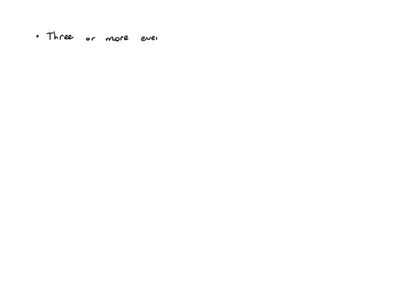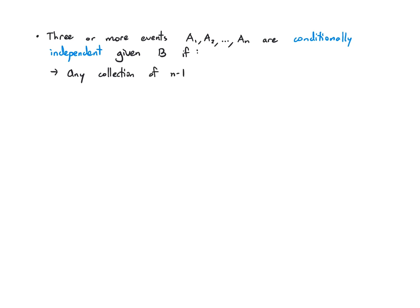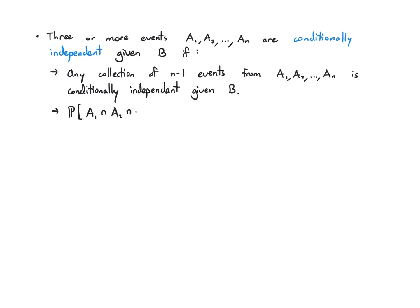For three or more events, we can also define conditional independence. Events A1, A2, …, An are conditionally independent given B if any collection of n−1 of them is conditionally independent given B, and additionally the probability of their full intersection given B equals the product of the individual probabilities given B. This is the same kind of recursive definition as for unconditional independence.